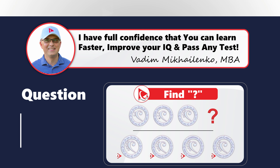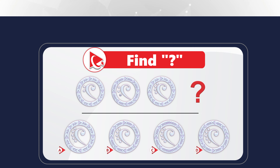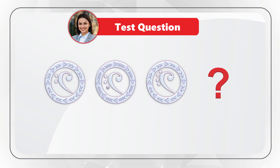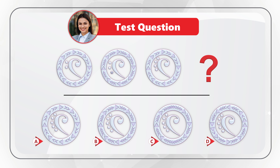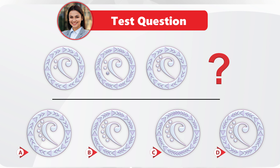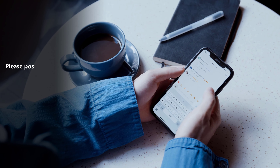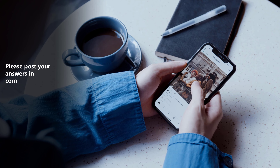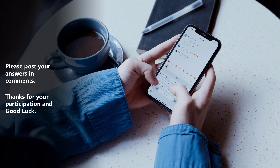I have a surprise practice question for you. You need to determine the missing item, and you're presented with choices A, B, C, and D. Take a close look and give yourself 10 to 15 seconds to see if you can come up with the solution. Once you're ready, please post it in comments so I can share my feedback. Thanks for participating, and good luck solving the challenge.